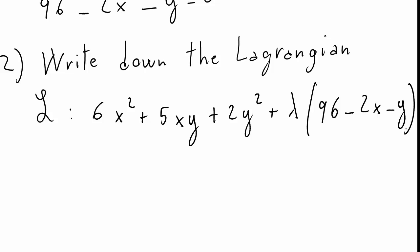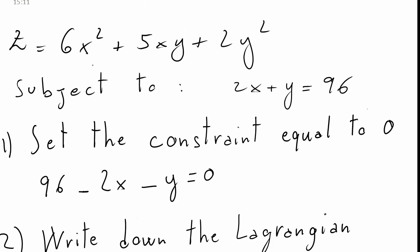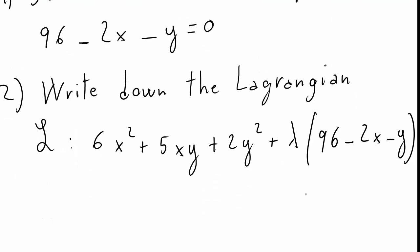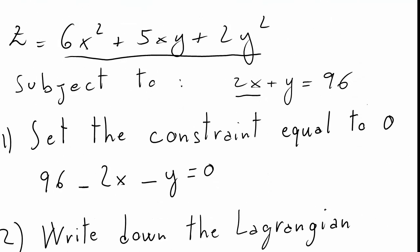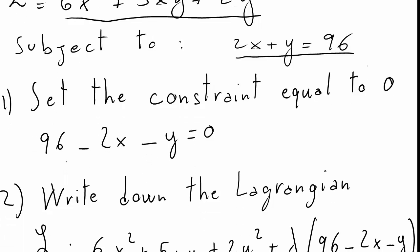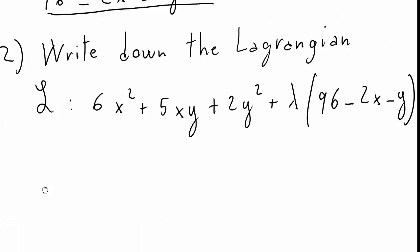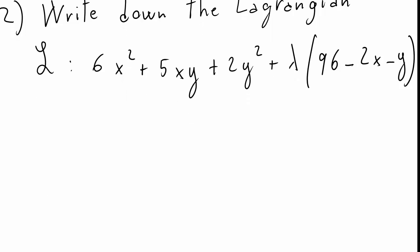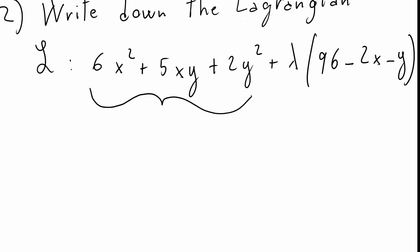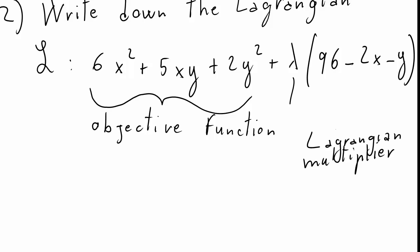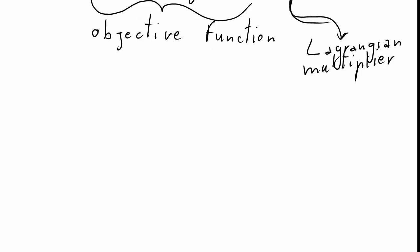In front of the budget constraint I write lambda which is our Lagrangian multiplier. So you see this is the utility function or the function that I want to maximize, and then this is the budget constraint or the constraint set to zero. This is just some terminology: the function that I want to find a maximum for is called the objective function, and that lambda there is the Lagrangian multiplier.